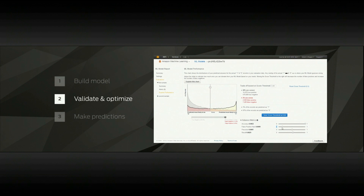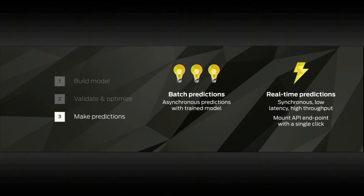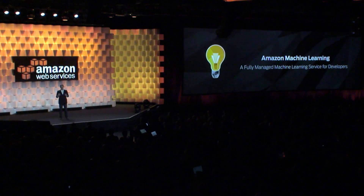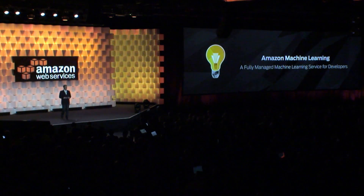Once you've got a model you like, you can make batch predictions asynchronously with a trained model, or mount a synchronous, low-latency, high-throughput API for your application with a single click. That's a very brief introduction to Amazon Machine Learning — a fully managed machine learning service for developers. I can't wait to see what you're going to build with it. Back to Andy.